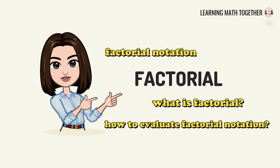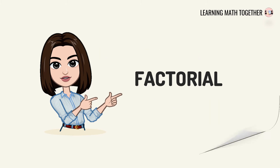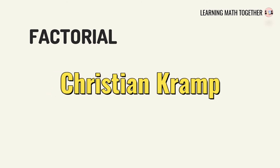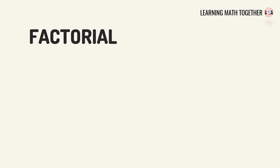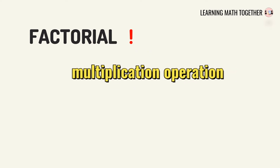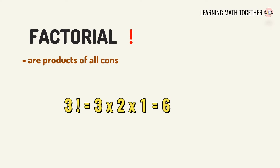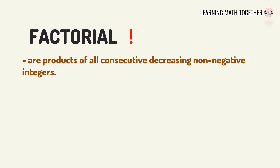Factorial was introduced in the early 1800s by Christian Kramp, who is a French mathematician. The notation used for factorial is an exclamation point. This notation represents a multiplication operation — if you have a non-negative integer with this notation, you have to get the products of all the consecutive decreasing non-negative integers. Factorial is denoted by n factorial.